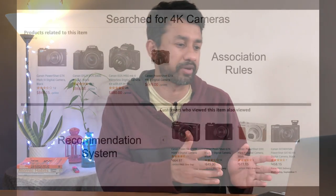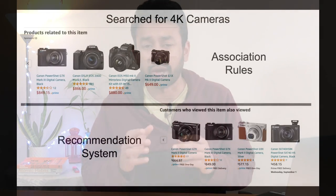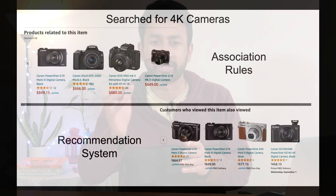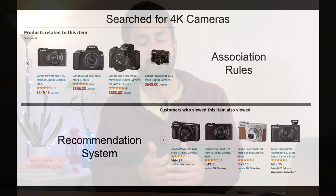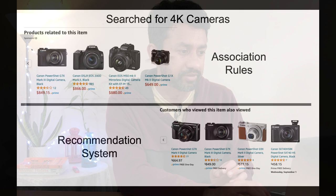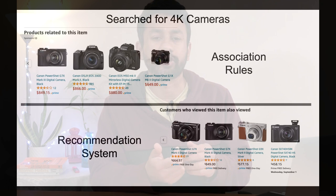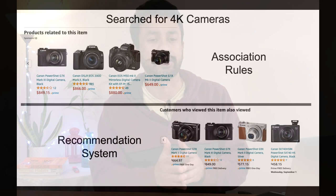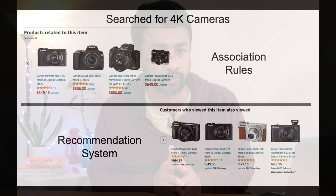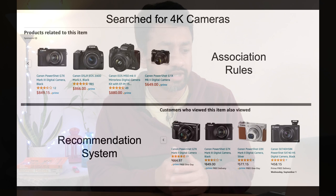As you see on my screen, I was searching for a 4K camera — browsing and looking at a few selected models. Here are some of the recommendations produced by the Amazon website. The top recommendations are based on association rule mining. It identifies the various items I am looking for and tries to surface other related items similar to what I've been searching for.